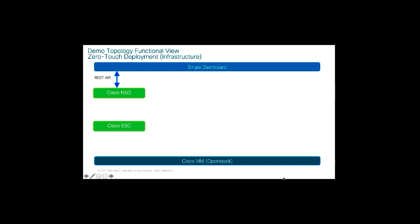Our demo starts from using existing infrastructure — the OpenStack created by Cisco CVIM. We will use a single dashboard to trigger the configuration. NSO, the Network Service Orchestrator, will orchestrate and send all the configuration. Cisco ESC, the Elastic Server Controller, will configure all the virtual machines. The single dashboard sends REST API to Cisco NSO, which sends NETCONF to Cisco ESC, which then sends REST API to OpenStack to start creating all the virtual machines.